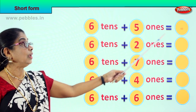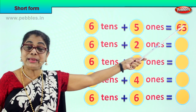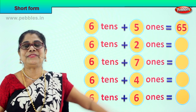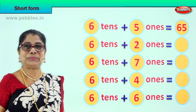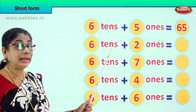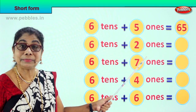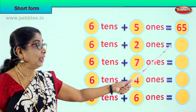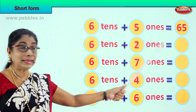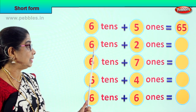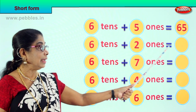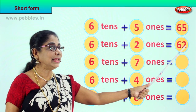6 tenths plus 5 ones is equal to? 6 and 5, 65. Good. 6 tenths plus 2 ones is equal to? 60 plus 2 is equal to? 6 tenths plus 2 ones is equal to? 62.